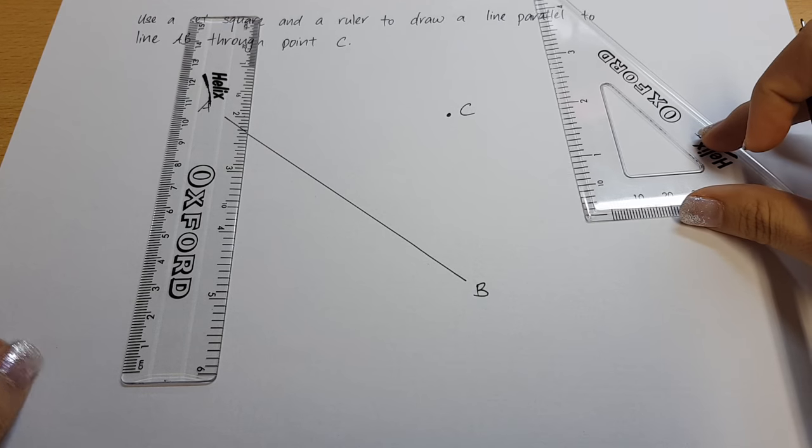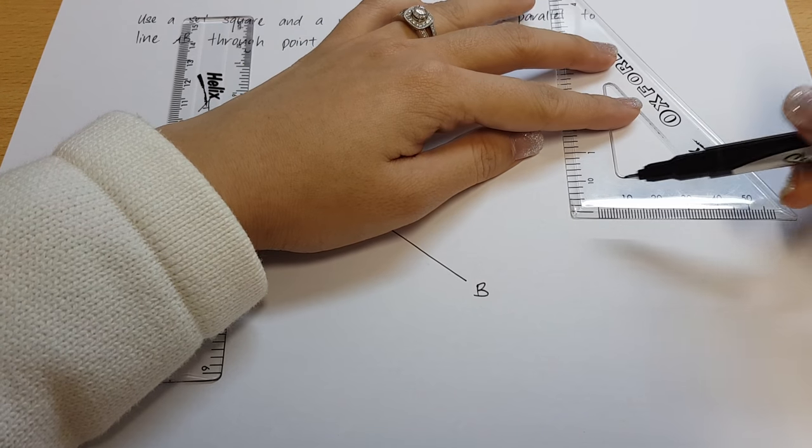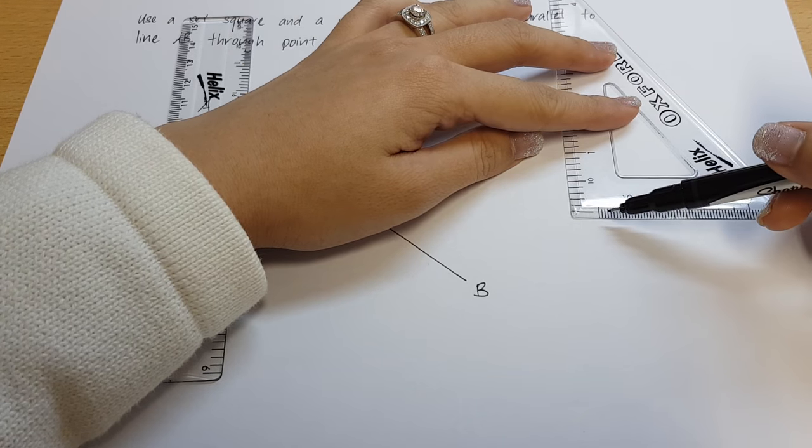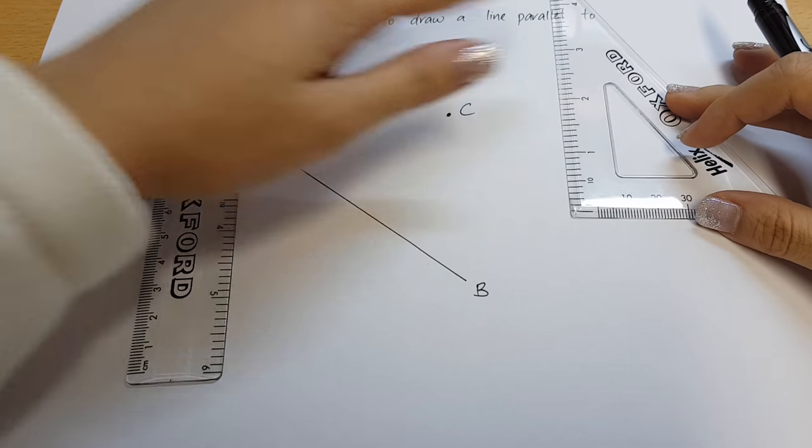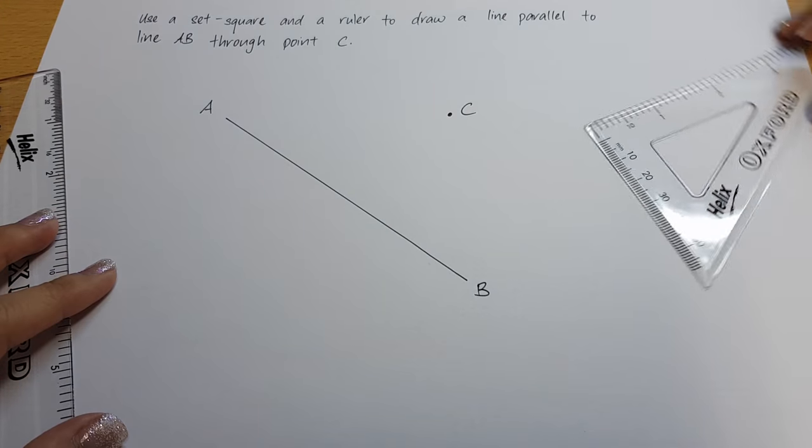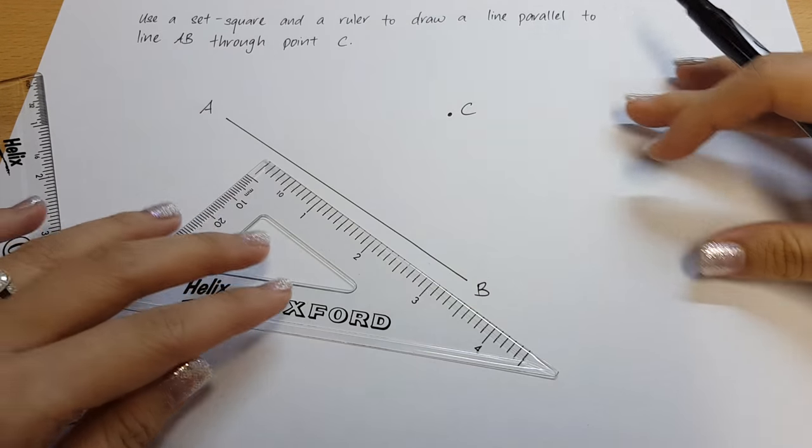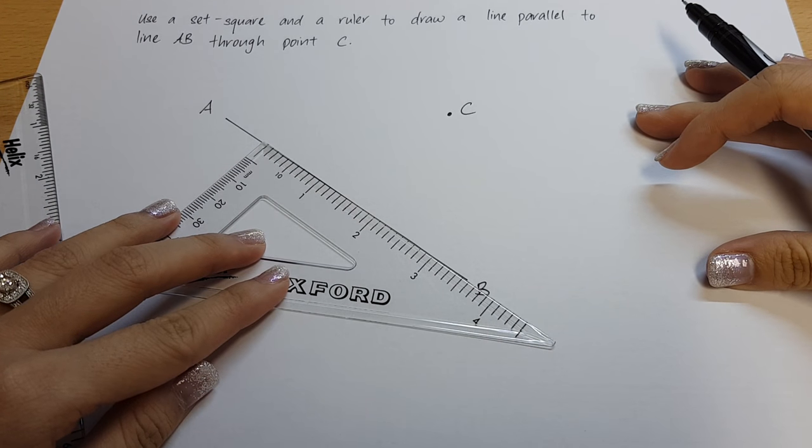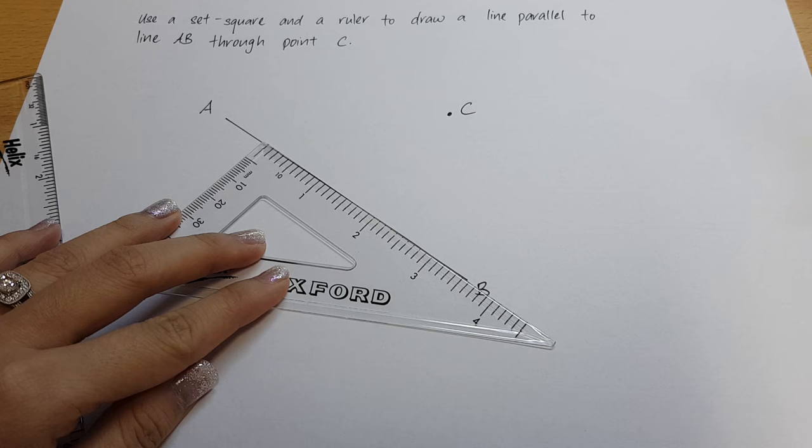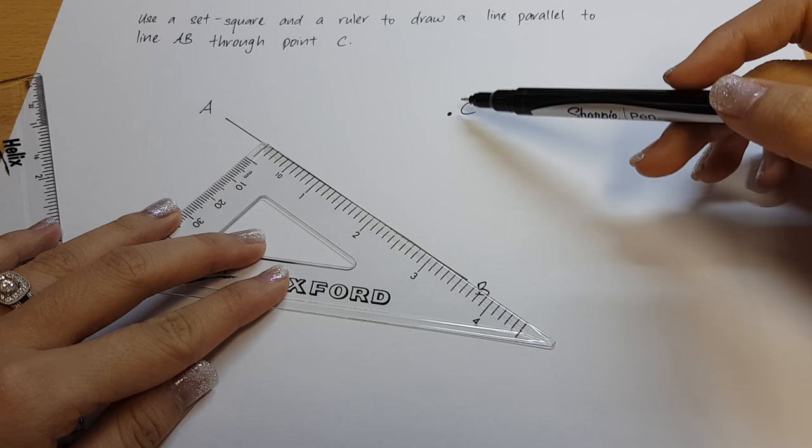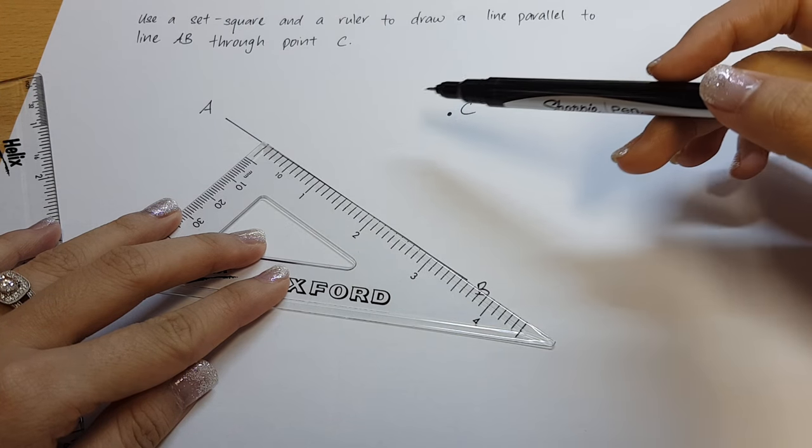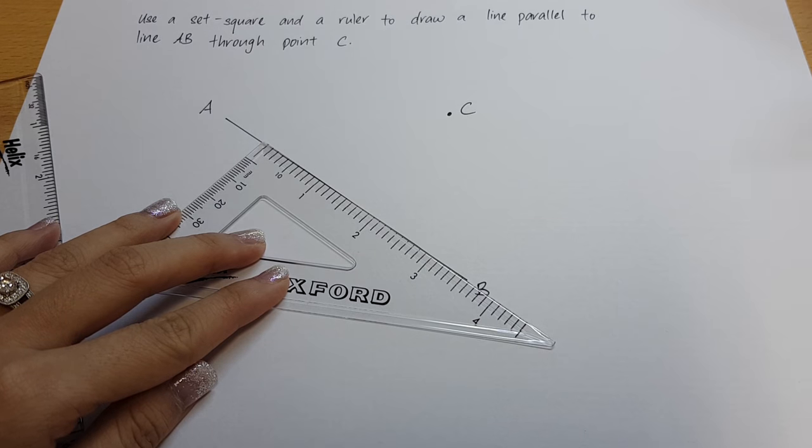To begin, let's identify the right angle on the set square, that is over here. We will now place the set square on the line. Now it is important to place the set square opposite the given point. This will help ease our drawing later on.